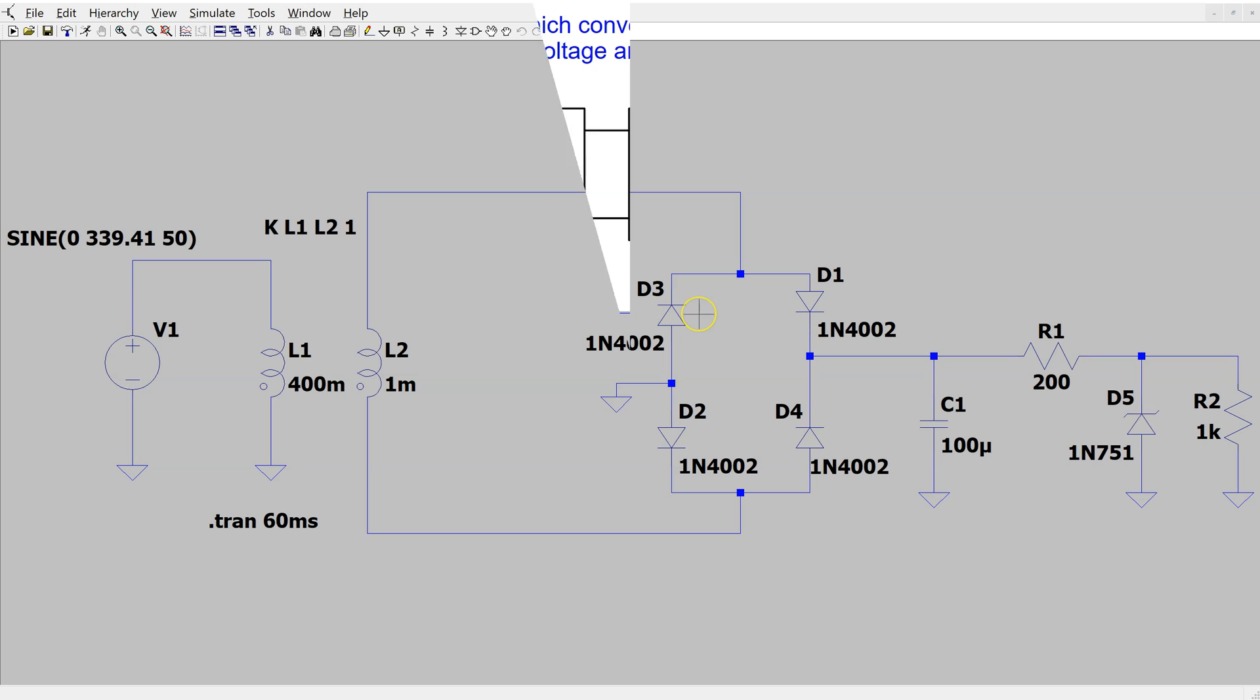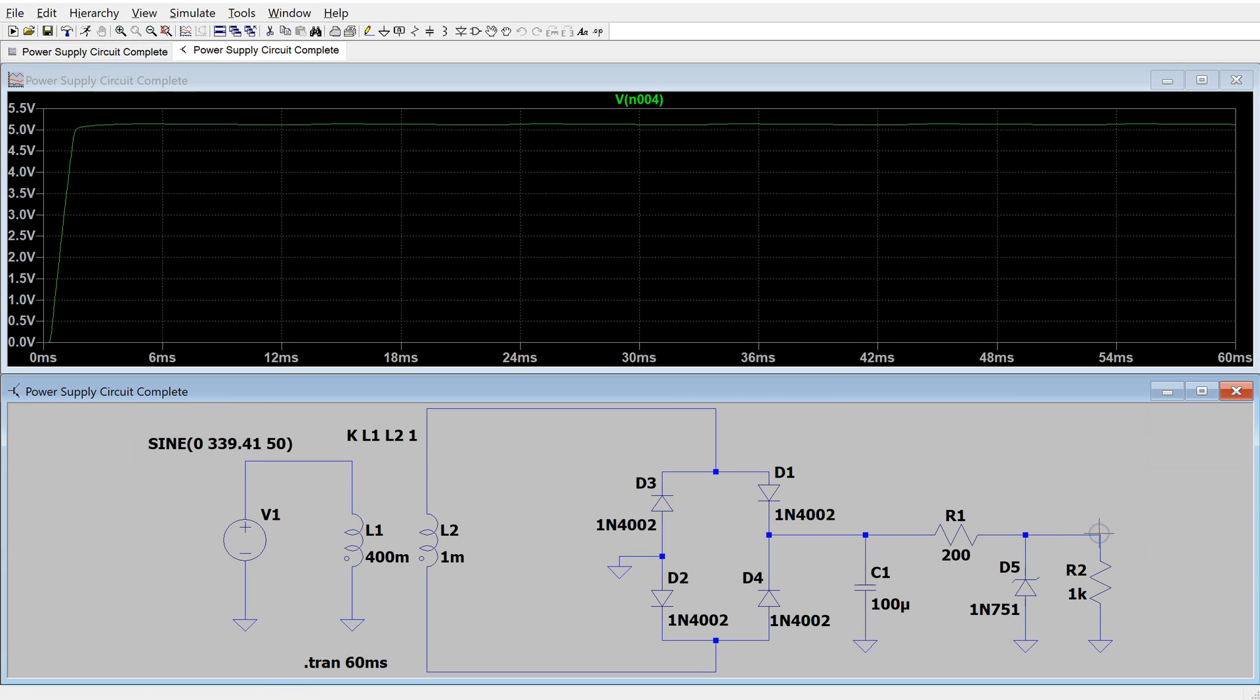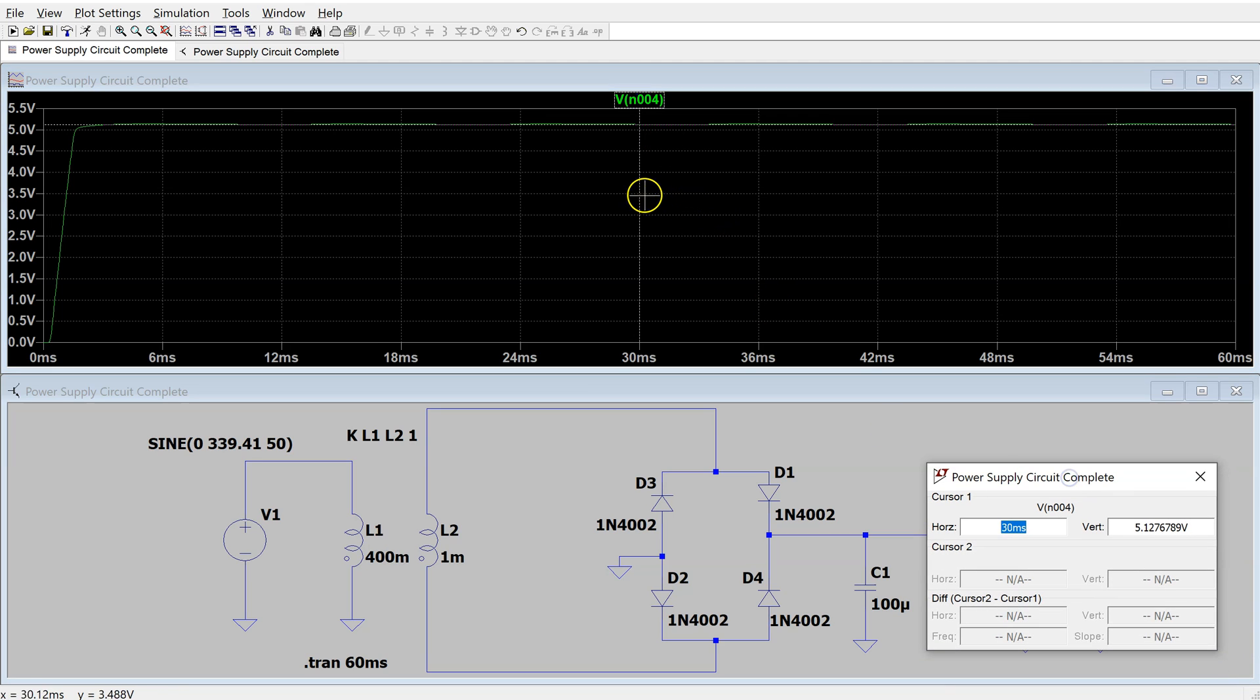This is the complete regulated power supply circuit in LTSpice. We can run this simulation and look at the output voltage. We can enable the cursor. We can see that the output voltage is about 5.1 volt DC as expected.